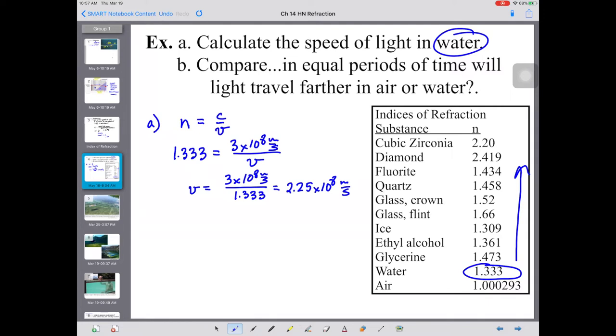When light is in water, it slows down to 2.25 times 10 to the 8th meters per second, which means it will refract, it will bend. In part B, compare in equal periods of time how light will travel in air and water. If we consider air and water using a simple time period like 1 second, at 3 times 10 to the 8th meters per second, light is going to travel 3 times 10 to the 8th meters. But in water, it's only going to travel 2.25 times 10 to the 8th meters, so that light does not travel as far when it's in water.